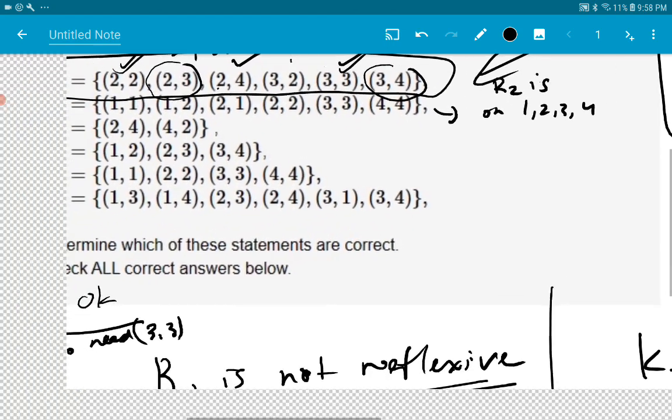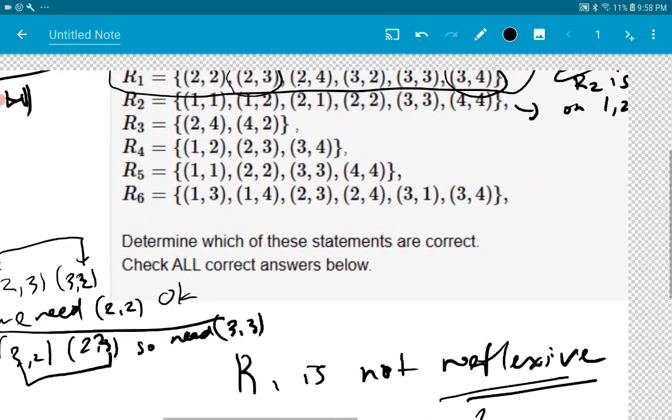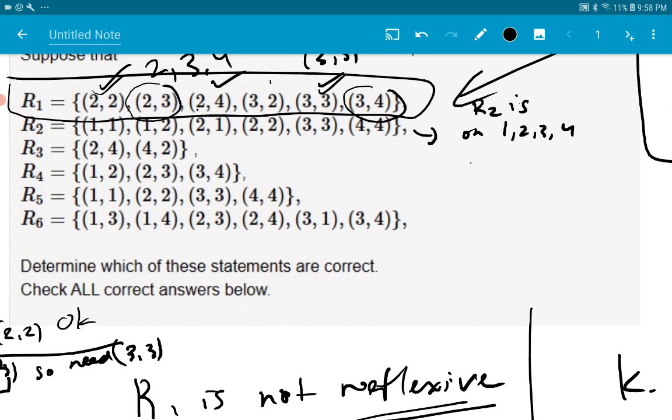Those are the only numbers you see in there for R2. So, so to be reflexive, it would require, sorry about that, let's bounce around. So to be reflexive, it would have to be the case that we would need 1 related to 1, 2 related to 2, et cetera.